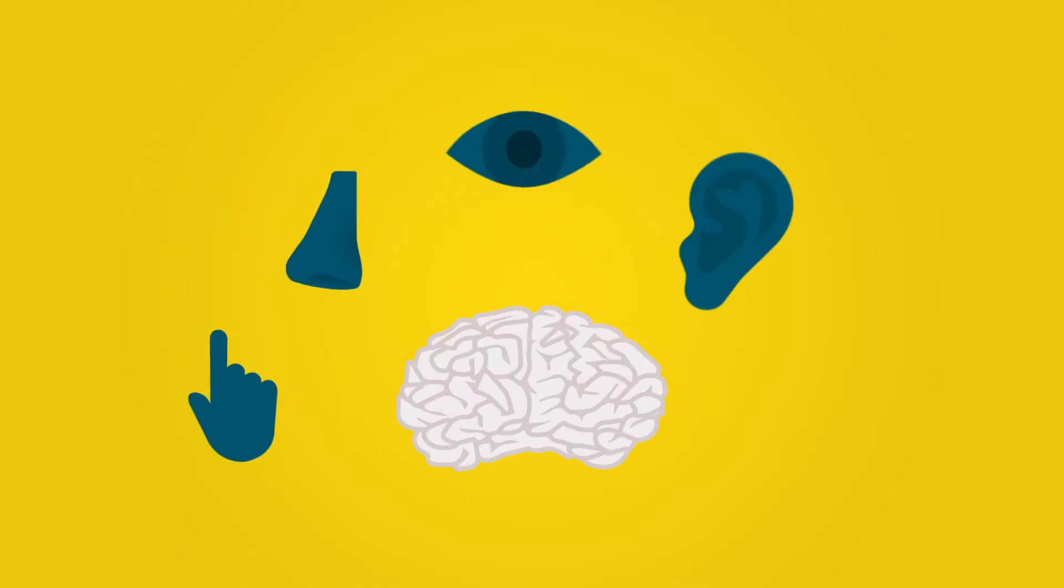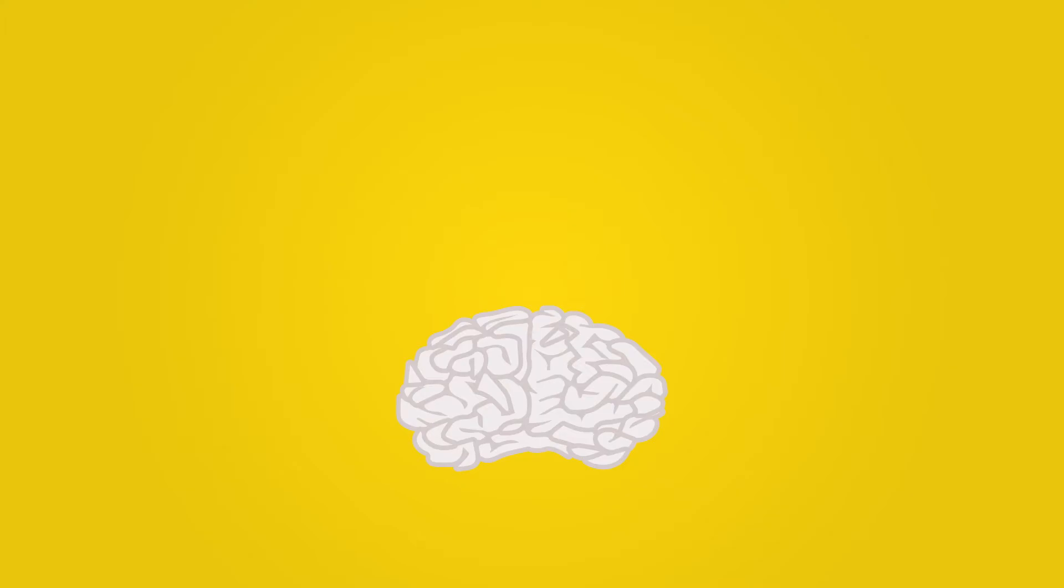Sensory memory is to simply pick up the information of your surroundings thanks to your five senses. This memory lasts up to a few seconds. Your brain would be overwhelmed if it tried to memorize the thousands of stimuli that your five senses capture. That is why almost all of that information is discarded. Some more important information stays in your short-term memory.